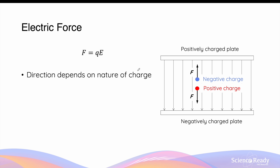The direction of this force depends on the nature of the charge — that is, whether the charge is positive or negative. For a positive charge, the force will be in the same direction as the electric field lines, and in the case of an electric field between two parallel charged plates, this force will be towards the negatively charged plate. For a negative charge, the force will be in the direction opposite to the electric field lines, towards the positively charged plate. In both cases, the force vectors are parallel to the electric field lines.